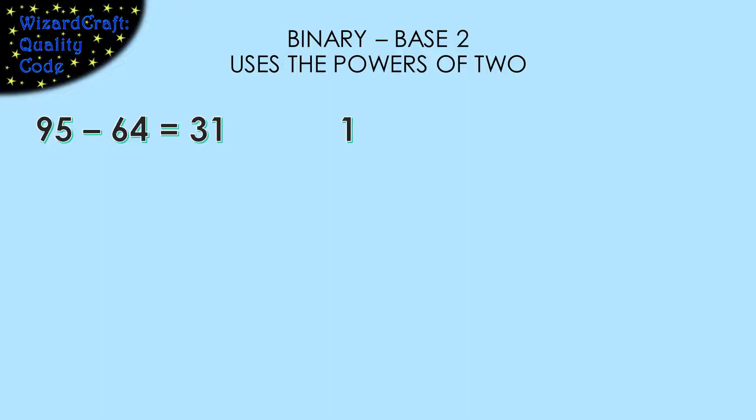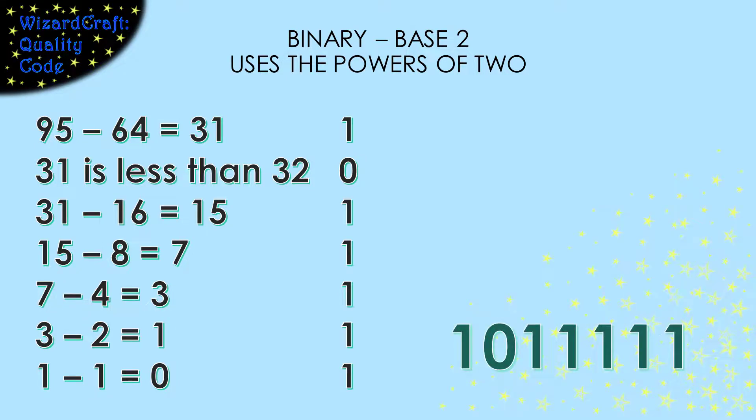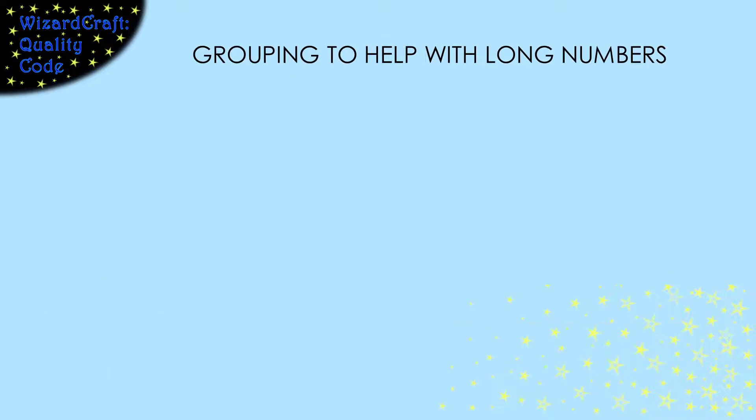So we can represent that 64 with a 1 in our binary number, and that leaves us a value of 31 left to convert. The next lower power of 2 is 32, but that's bigger than our 31, so we can't use that. We write a 0 in that position. The next lower power of 2 is 16. Putting a 1 in that position leaves us 15 left to convert. We just continue with that all through the powers of 2 down to 1. We put a 1 for every power of 2 that we used and a 0 for every one we skipped.